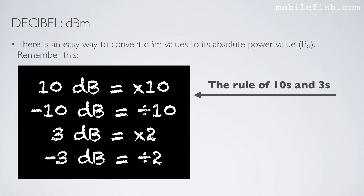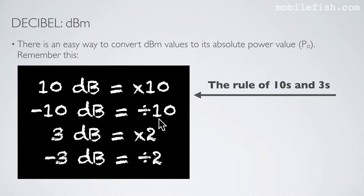There is an easy way to convert dBm values to absolute power: remember the rule of tens and threes. If you see 10 dB, multiply by 10. If you see minus 10 dB, divide by 10. If you see 3 dB, multiply by 2. And if you see minus 3 dB, divide by 2.